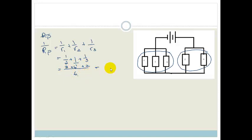I'm going to write it over here because I'm running out of space. So 3 and 6 is 9 and 2 is 11 over 6. OK, so that is equal to 1 over R parallel.